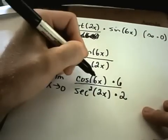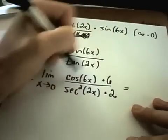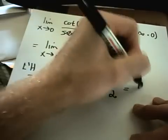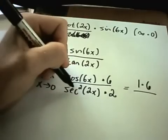And as x approaches 0, you're going to get cosine of 0. Well, cosine of 0 is 1. So you'll get 1 times 6.